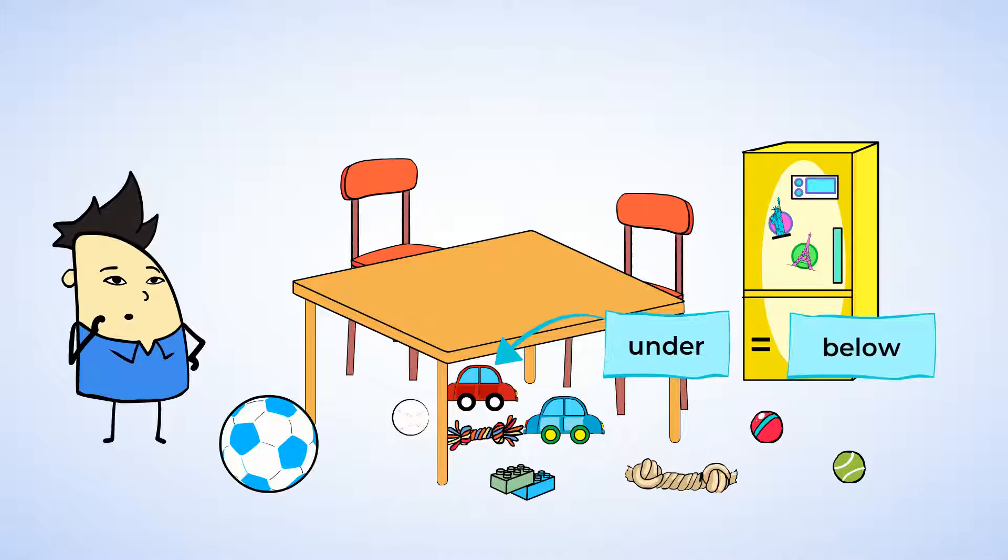You know, I wonder what else can we see under the table? Ah, cool. There's also a toy dog under the table. And I see a ball that was left under the table, too. And Chen also has another car below the table. The toy dog, ball, and toy car were all left under the table.